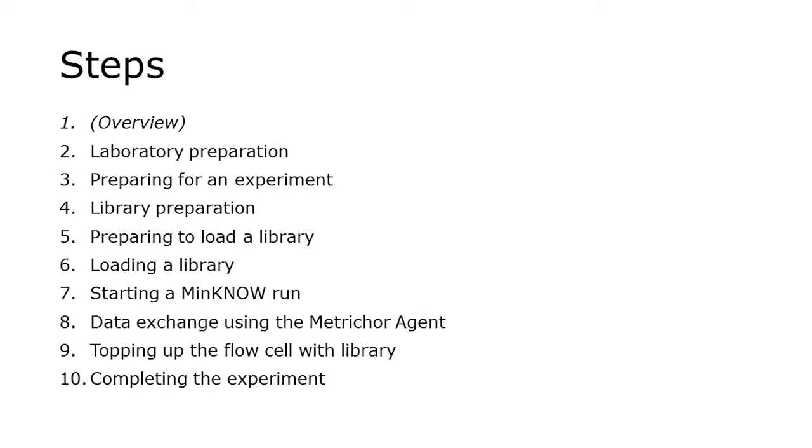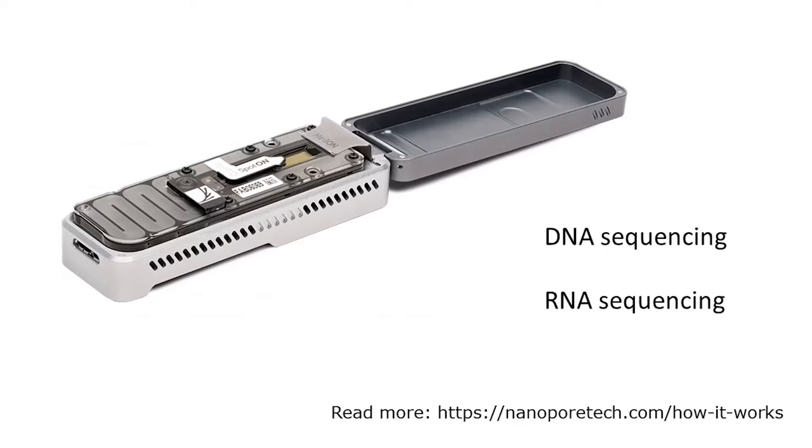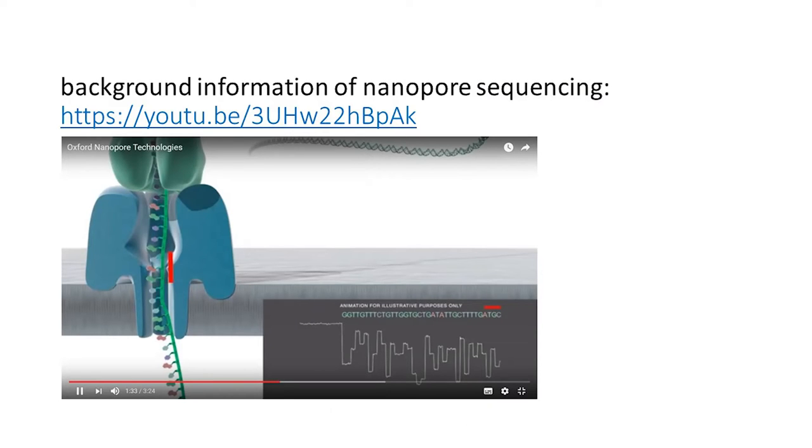MinION is a portable real-time device for DNA and RNA sequencing. Each consumable flow cell can now generate 5 to 10 GB of DNA sequencing data. Ultra long read lengths are possible, hundreds of kilobases, as you can choose your fragment length. The MinION streams data in real-time. You can watch this video about the background of nanopore sequencing.